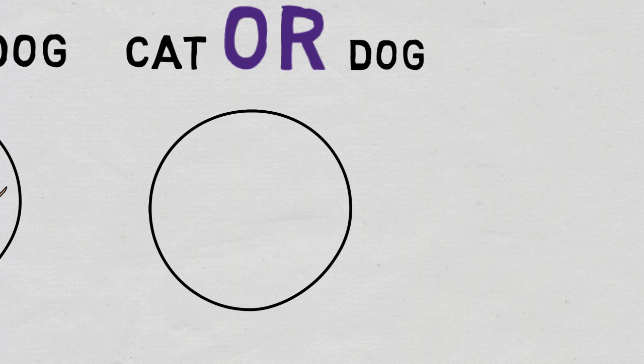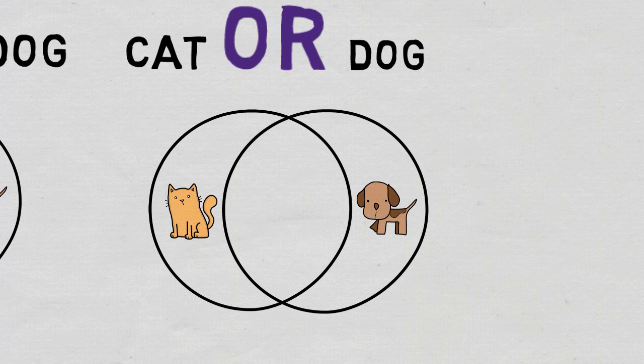However, if you want to expand your search, use the Boolean operator OR. Cat OR dog. This technique will allow you to retrieve results that contain the keywords CAT, DOG, OR cat AND DOG.